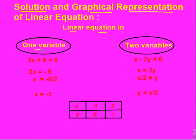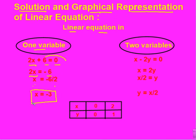Linear equation in one variable का example: 2x plus 6 equals to 0. इसे x के लिए solve करेंगे। 2x equals to minus 6, x equals to minus 6 upon 2, finally x equals to minus 3. यह एक value आई, cancel out होने के बाद — यह linear equation in one variable का solution हो गया।